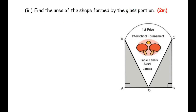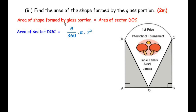Now let us move on to the third sub-question, which also has an OR option. Find the area of the shape formed by the glass portion. The sector DOC represents the glass portion, so we find the area of sector DOC. The formula is: area of sector = (θ/360) × π × r². In part 1, we already found the central angle θ = 60°. Now we need the radius of the sector.